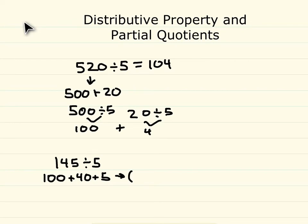So we have 100 divided by 5, we have 40 divided by 5, and we have 5 divided by 5. All these quotients added together will give us our answer.